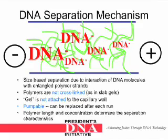Here we have a buildup of the entangled polymer strands. When the DNA molecules are introduced, they flow from the negative electrode to the positive electrode. As they do so, the smaller DNA molecules are able to pass through the entangled polymer strands first, allowing for a size-based separation.